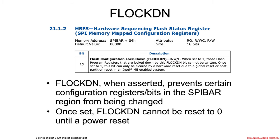What's FLOCKDN? FLOCKDN at SPI bar plus 4 in the hardware sequencing flash status register is bit 15. It says it's readable, writable, and lockable. Typically when an Intel register says it's lockable, that means if you set this bit, it can't be unset until the system resets.